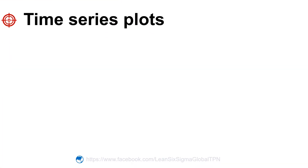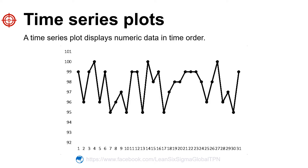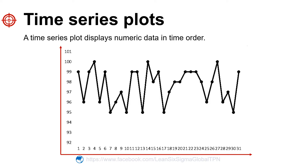Because the x-dimensions are collected at regular time intervals, we can use a time series plot to answer time-related questions about the dimension. A time series plot displays numeric data in time order. The horizontal axis shows the order in which the data were collected, and the vertical axis shows the data values. For example, the index 4 has the x-dimension of about 100.